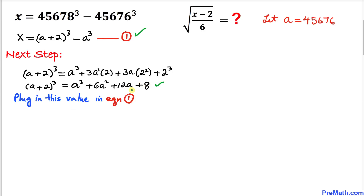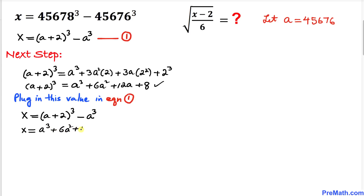Now let's plug this expansion back into equation one. So x equals (a cubed plus 6a squared plus 12a plus 8) minus a cubed. The a cubed terms cancel each other, and we end up with x equals 6a squared plus 12a plus 8.